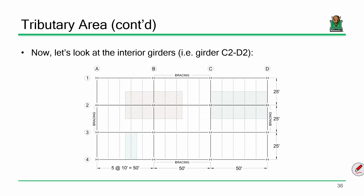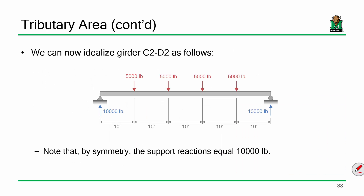That is for beam C2 to D2. Now, if we were looking at C4 to D4, what would the point loads be? 2,500 pounds — because that's the edge element on the bottom, and there's only one beam framing into it from one side, not two. One on either side, not two beams contributing. It's just making sure you recognize what's going on in the structure.